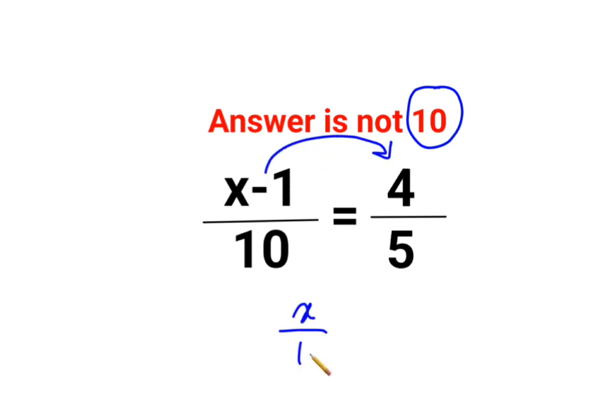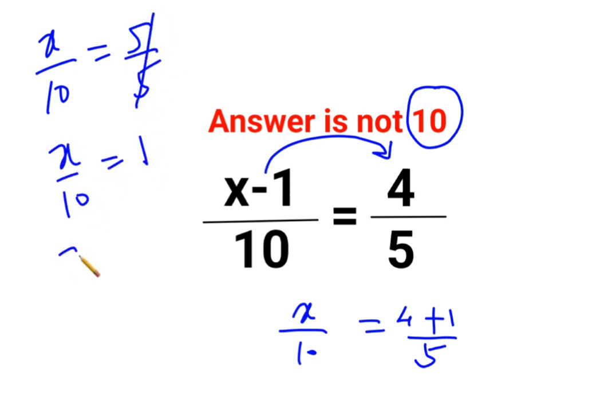So you got x upon 10 equals to 4 plus 1 upon 5. So basically you got x upon 10 equals to 5 by 5. So this gets cancelled. So you just have x upon 10 equals to 1. So x equals to 10.